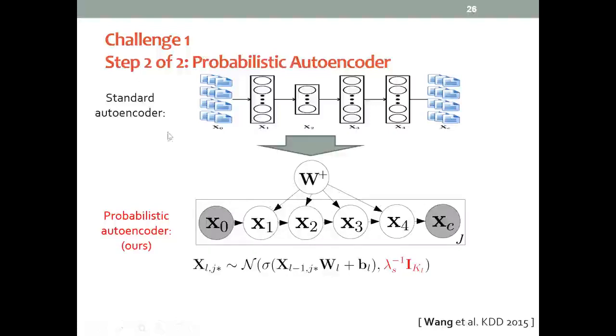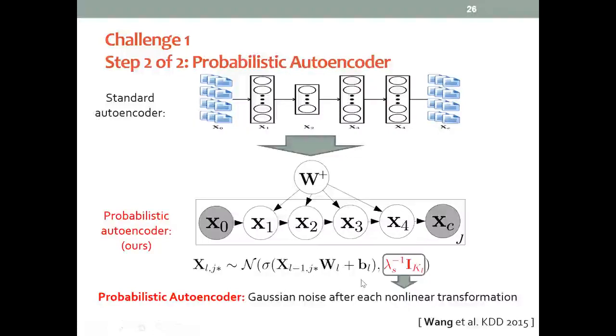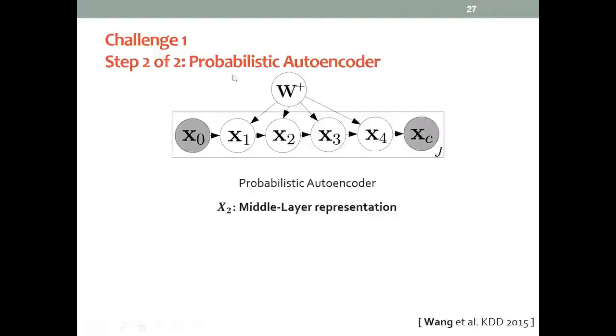The difference between the standard autoencoder and the probabilistic autoencoder is that we transform the output of each non-linear transformation, which is originally a value, into a Gaussian distribution centered at that value with some level of noise or variance. From now on, we will use this figure to represent the probabilistic autoencoder. We use the conventional graphical model notation: shaded circles represent observed variables, transparent circles represent latent variables and parameters to learn. J here is the number of documents or items.